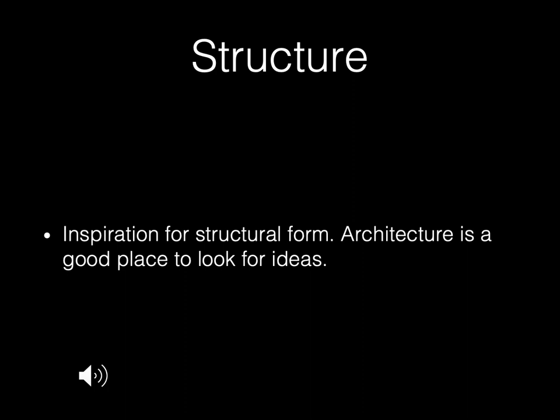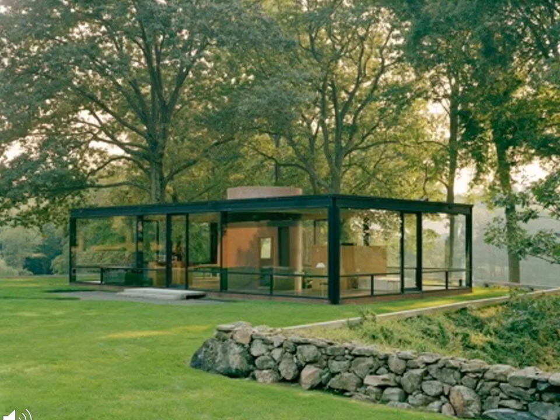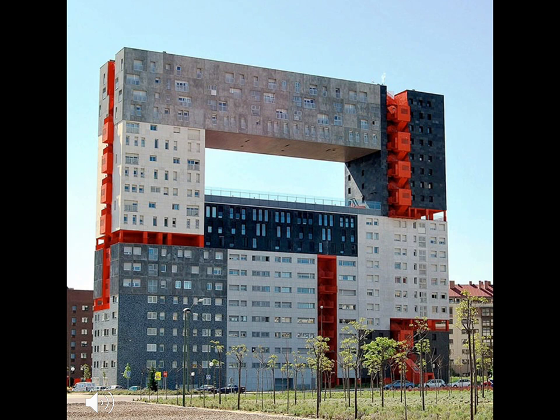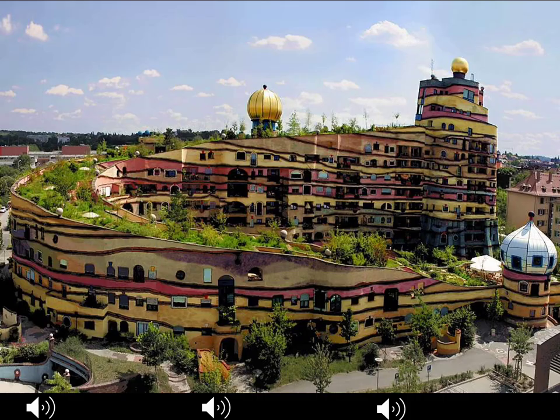So here we're looking at structural form. As an inspiration, you can often look to things like architecture or furniture. You don't have to do architectural models, but that's a good place to start. The very famous glass house by Philip Johnson — I think it'd be cool to live in here, but I sometimes want some curtains. Here's an apartment block that has a very interesting negative space in the middle. This is another work by the architect Hundertwasser, where he includes both plants and building, and he often bases his structures on various organic forms.